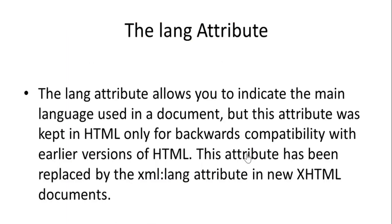The lang attribute allows you to indicate the main language used in a document. You can use the main language to indicate the lang attribute. However, this attribute was kept in HTML only for backwards compatibility with earlier versions of HTML.